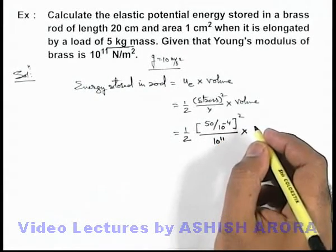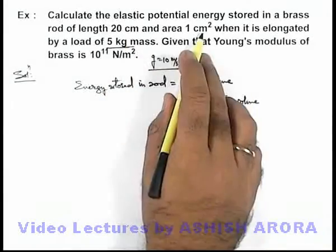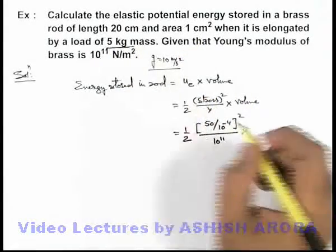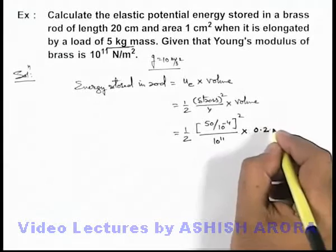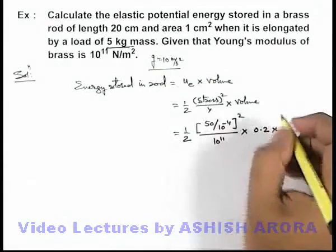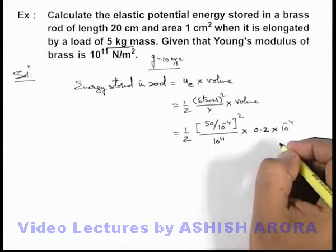Multiplied by the volume, which can be written as length multiplied by area. So the length of the rod is 0.2 and the area of the rod is 10 to power minus 4 meter square.